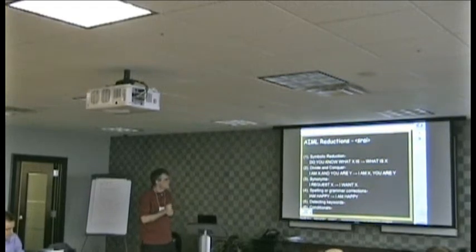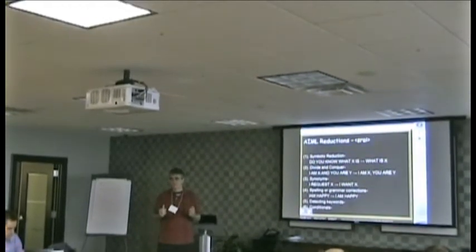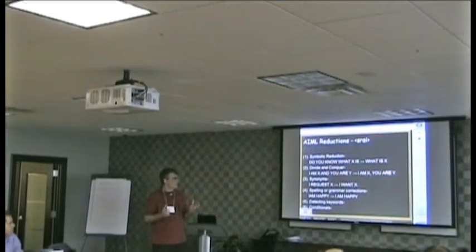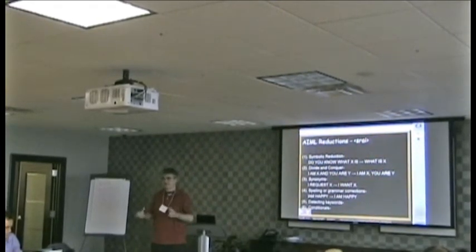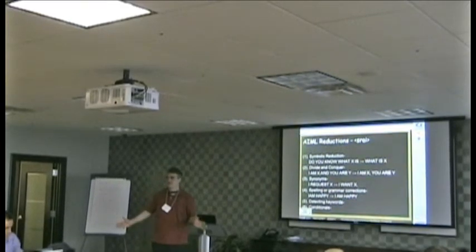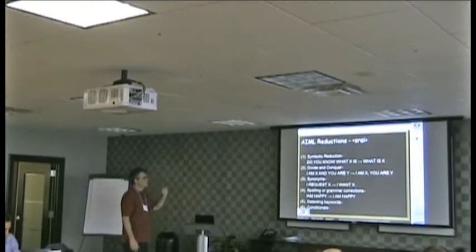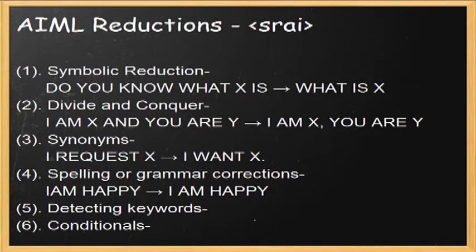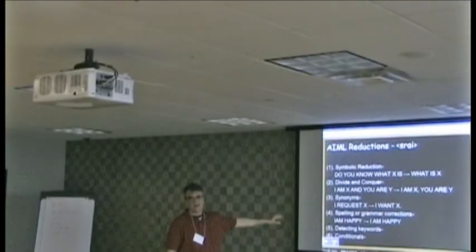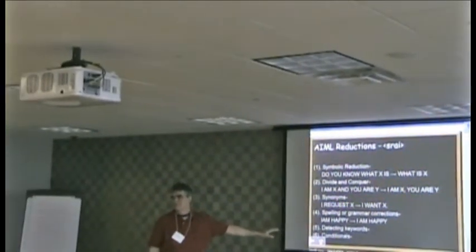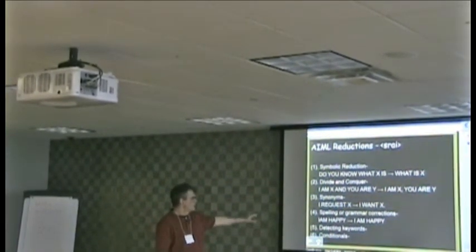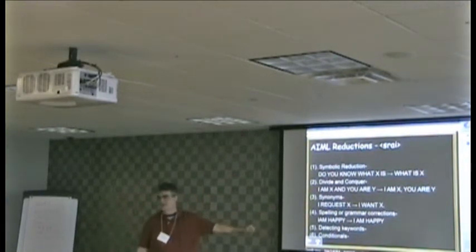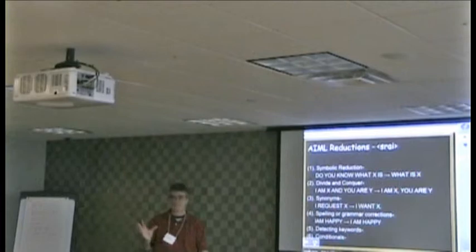SRAI is also used for synonym resolution. There are many ways of saying 'I want X' — 'I request X,' 'can I get X,' 'I'd really like to have an X' — and those can all be reduced with SRAI to the simpler form 'I want X.' There are also spelling and grammar corrections: a frequent case is the term 'Iam' as one word without a space. Symbolic reduction can transform that into something the bot can recognize by expanding it into two words.